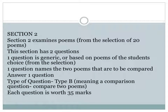Section 2 examines poems from a selection of 20 poems that you have studied. This section has two questions. One question is generic, based on poems from the student's own choice from the selection. The other question gives you the names of two poems that you are to compare. Either way, the section on poetry requires a comparison — you must compare both poems, whether the two you selected or the two you are given. This has not changed from previous years. Answer one question here; each question is a Type B question worth 35 marks.